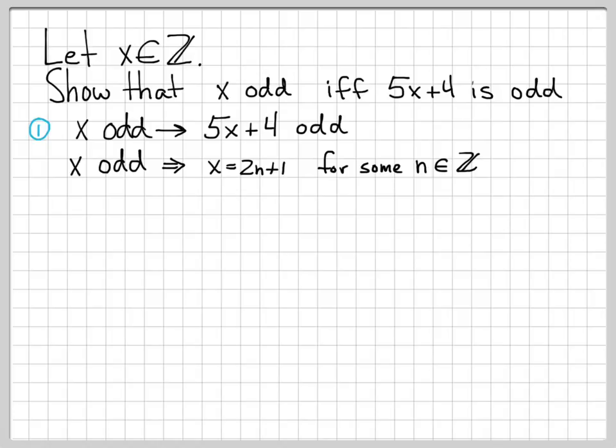No matter what n in Z, 2 times that number will be an even number. You tack on 1, you get odd. This is how we always represent odd numbers. When x is odd, I can always write it this way for some n in the set Z.